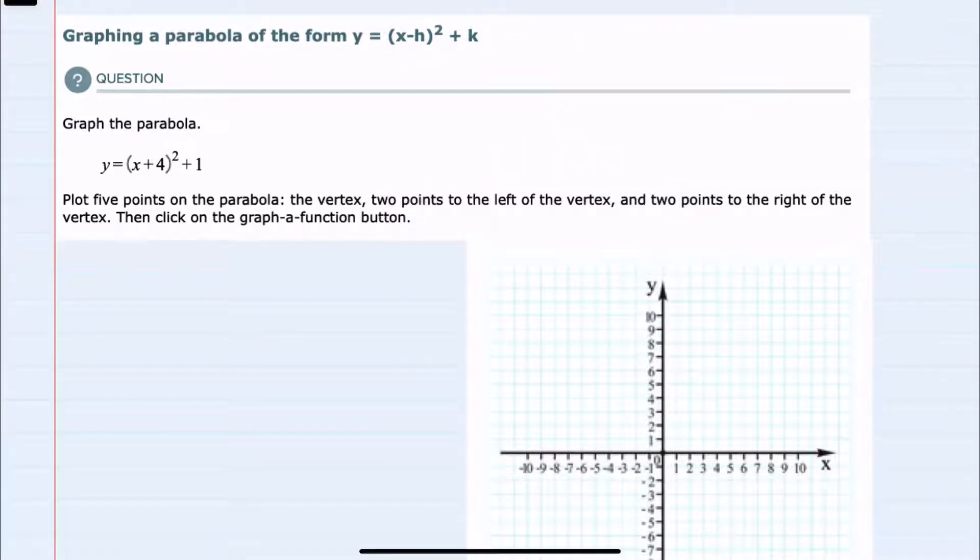In this video I'll be helping you with the Alex problem type called graphing a parabola of the form y equals (x-h)² + k. We're asked to graph the parabola y = (x+4)² + 1, and we're told to do so by plotting 5 points: the vertex,